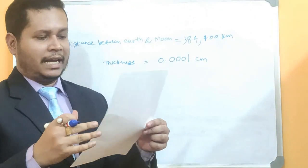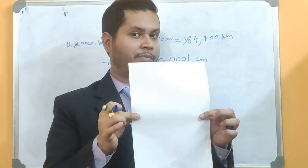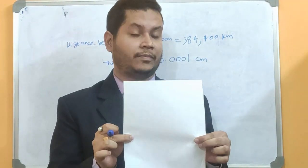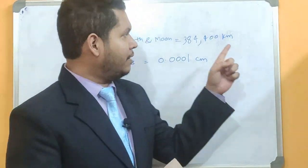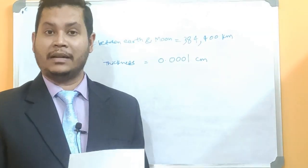Now the concept here is that if you can fold this paper 50 times, remember it? If you can fold this paper 50 times, you will cover the distance between Earth and Moon. So that means if you can fold this paper 50 times it will reach.